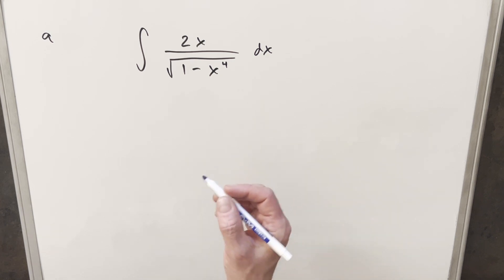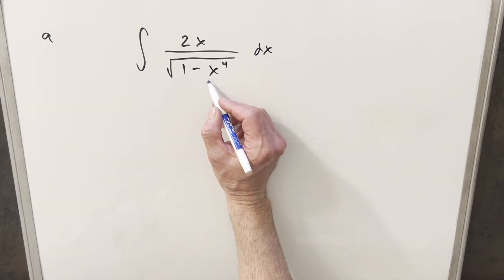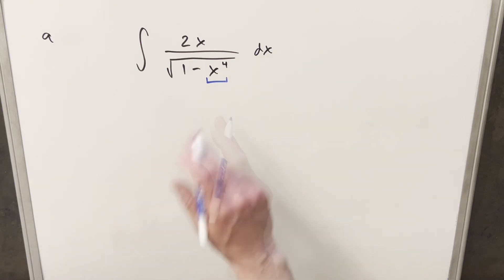To get started with this, when we have the square root of 1 minus x to the 4th here, typically what we want is 1 minus x squared, because then it's usually easier to do a trig substitution or maybe a u substitution, especially where we have 2x here.